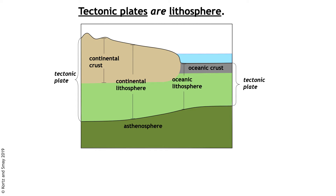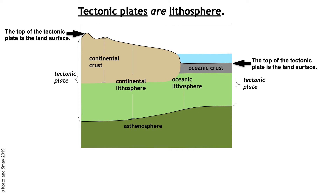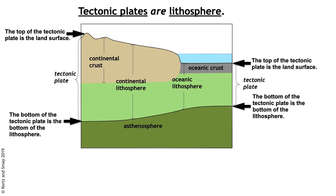Tectonic plates are pieces of lithosphere. A lot of us might think tectonic plates are the crust, but they're not just the crust — they're the lithosphere. The top of a tectonic plate is the land surface, whether continental or oceanic crust. The bottom of the tectonic plate is the bottom of the lithosphere — the boundary in the mantle between what behaves in a brittle manner and what behaves in a ductile manner marks that bottom of the tectonic plate.